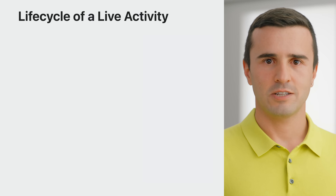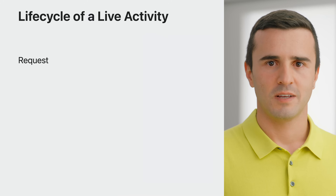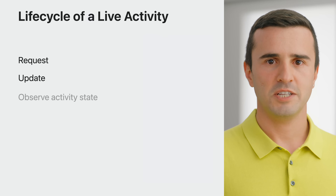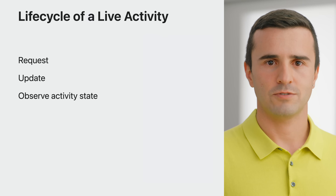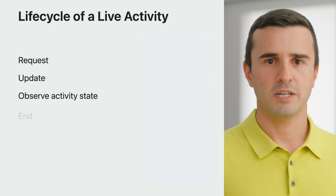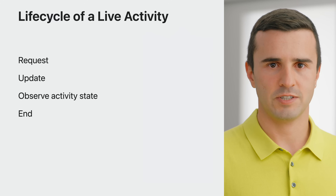The life cycle of a live activity contains four main steps. Start by requesting an activity. Once it has started, update it with your latest content. In the meantime, observe your activity to react to state changes, such as people ending it. When the task is completed, make sure to end the activity.